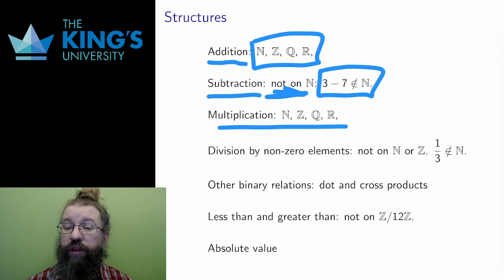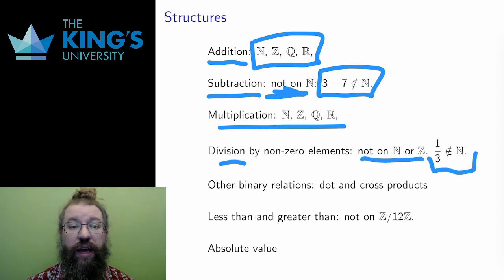Multiplication is a structure on all of these again, but division is not a structure on the natural numbers or the integers. Dividing by whole numbers does not produce whole numbers, it produces fractions.